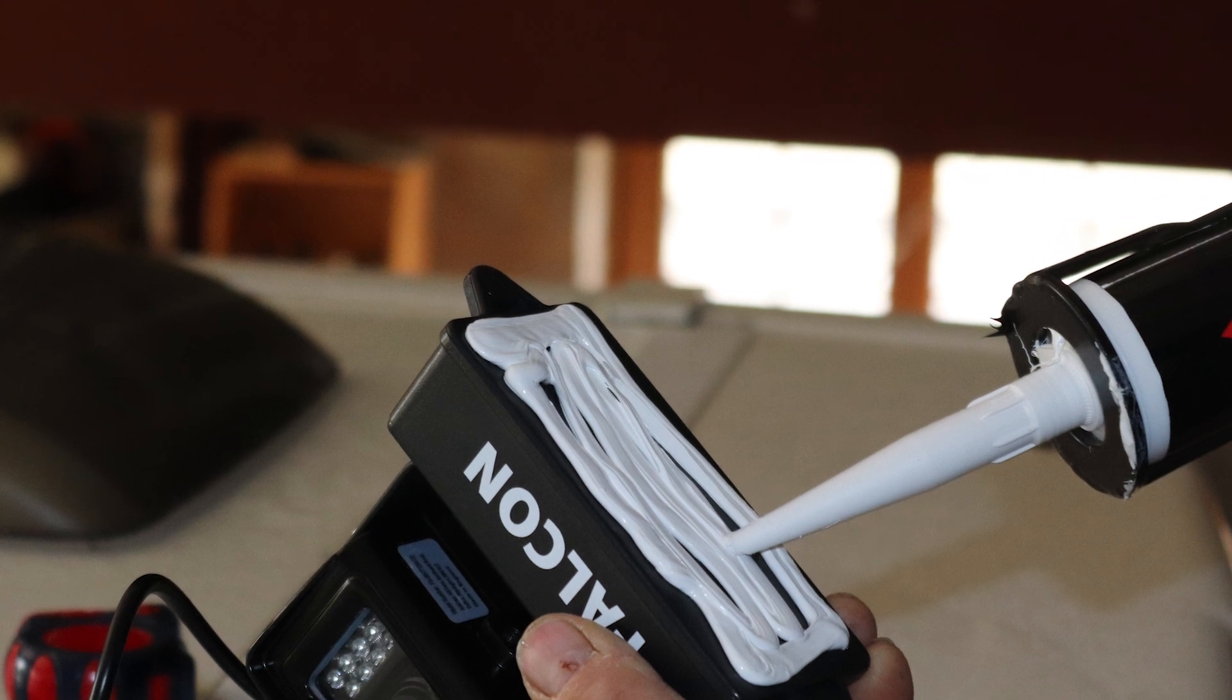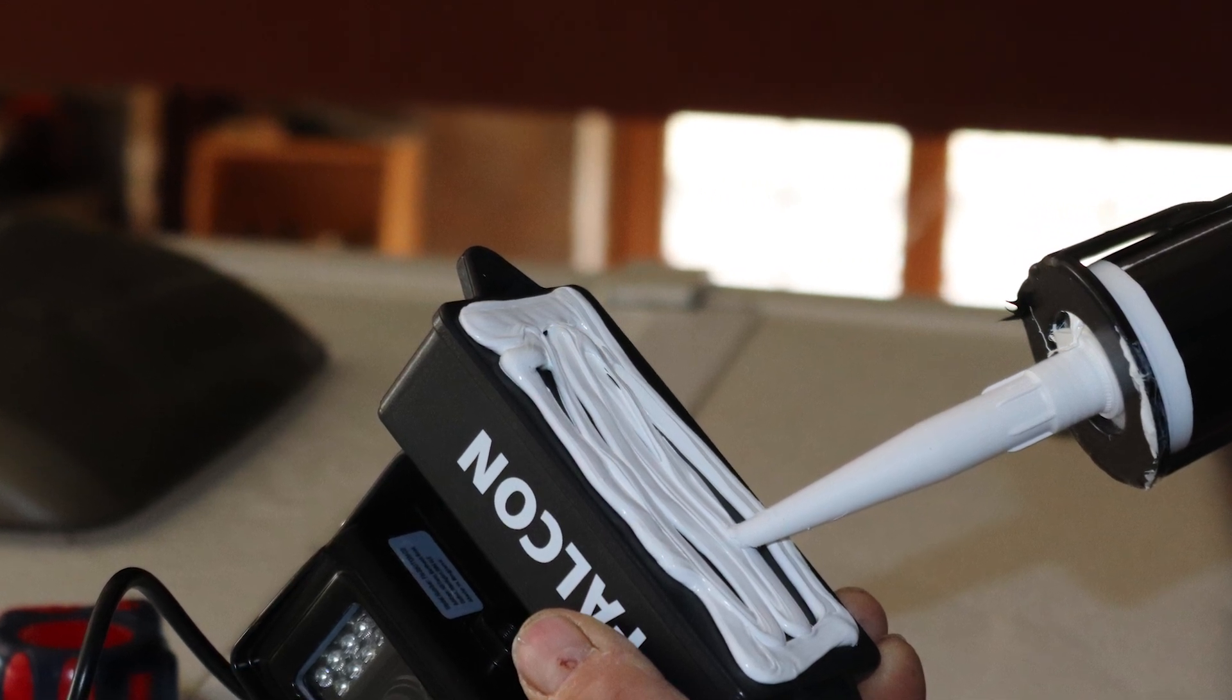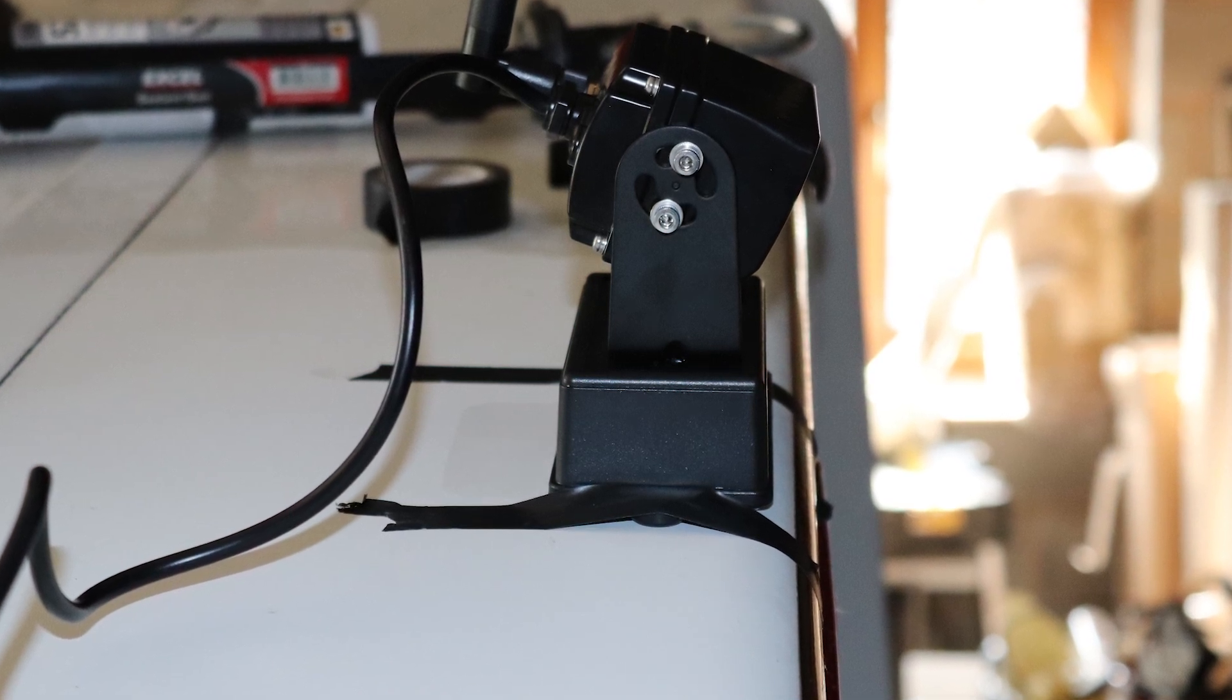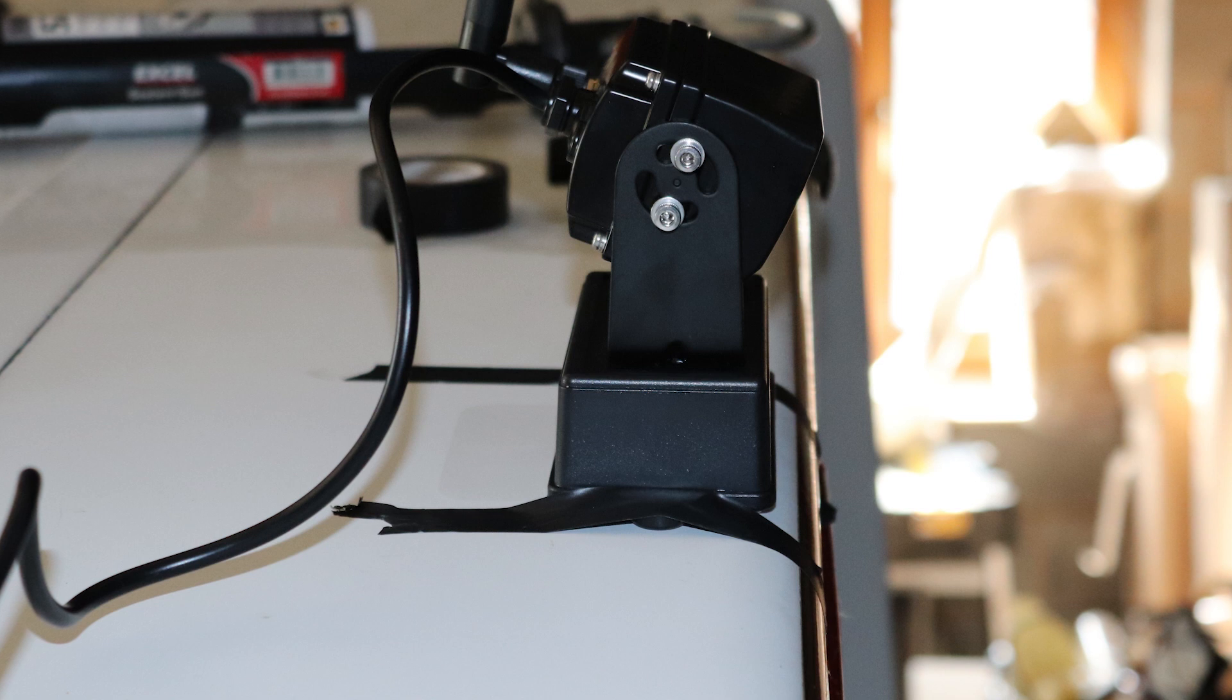Apply a generous amount of Sikaflex evenly to the base of the mounting box. Gently add pressure to the mounting box so the Sikaflex spreads and tape the mounting box in position so it doesn't move while the Sikaflex hardens.